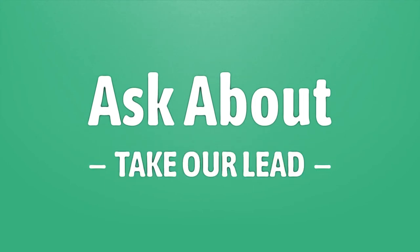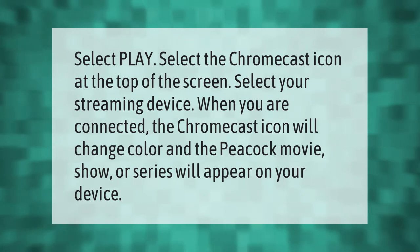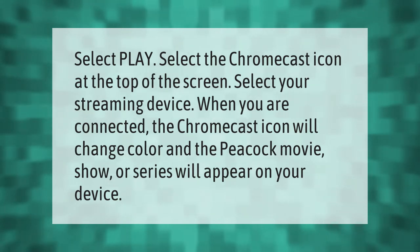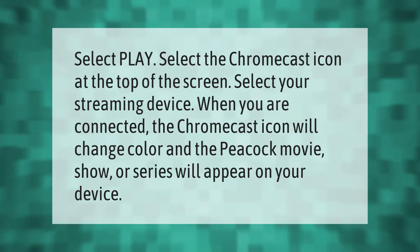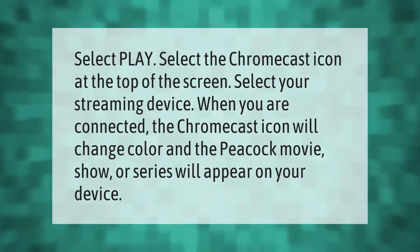Select Play, then select the Chromecast icon at the top of the screen. Select your streaming device. When you are connected, the Chromecast icon will change color and the Peacock movie, show, or series will appear on your device.